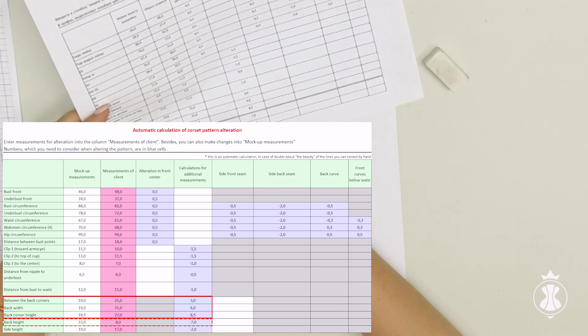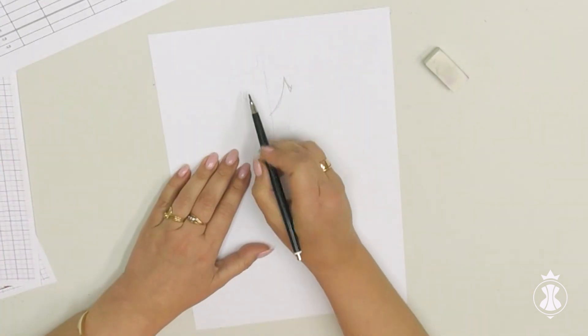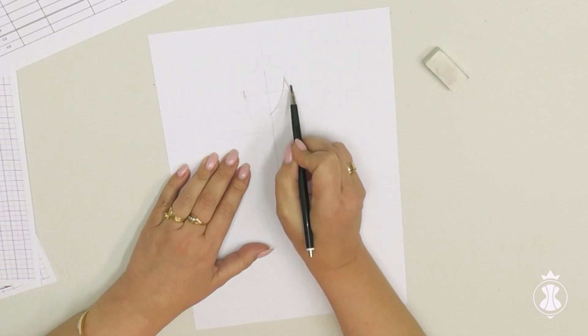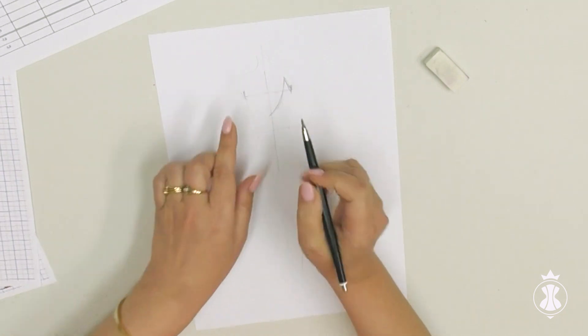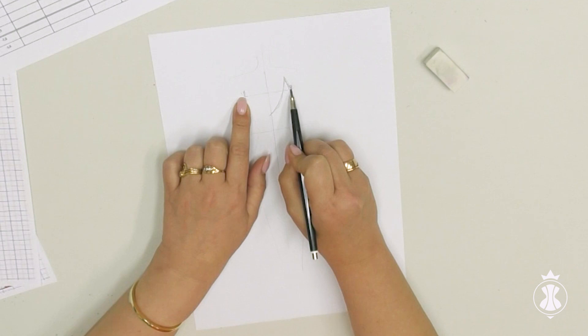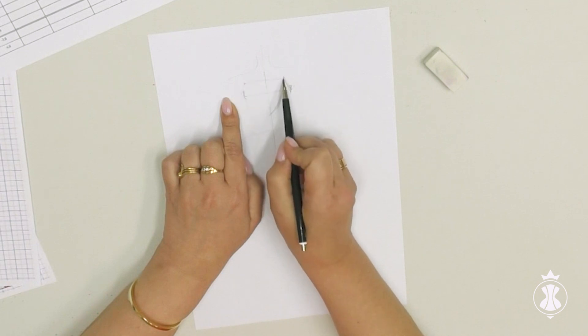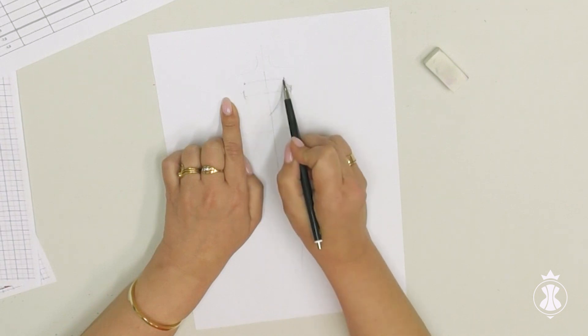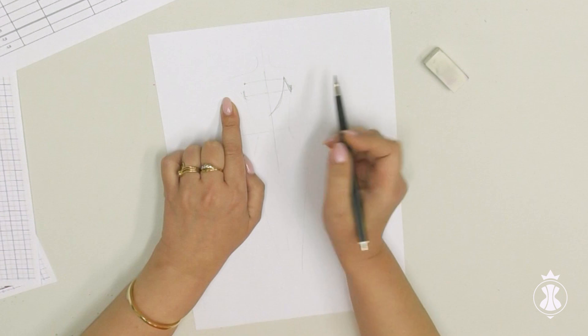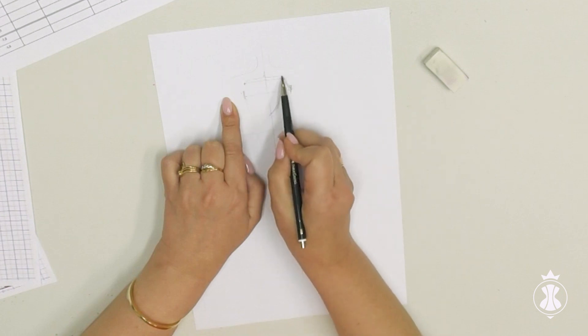So we will use the following additional measurements. Back width: it is the distance between armpits. The measurement is taken as a full measurement, not a half one. Between the back corners: it is the distance between the tops of the imaginary or proposed corners. The measurement is also taken in full length.